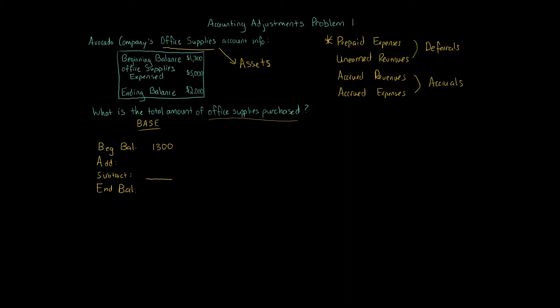The beginning balance in the supplies account is $1,300 — think of that as the million sheets of paper. We end with $2,000, so office supplies have gone up. However, we're told some was expensed during the period. The expense amount is what gets subtracted. With the million sheets of paper example, you don't make a journal entry every time you use a sheet — that would be inefficient.